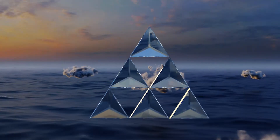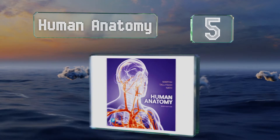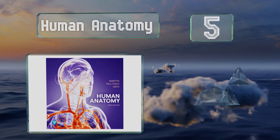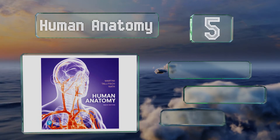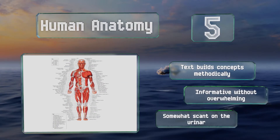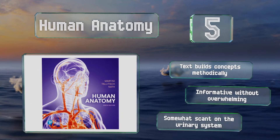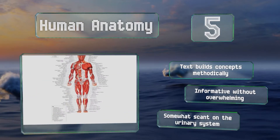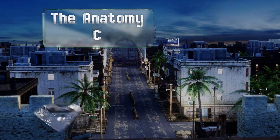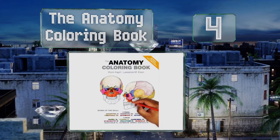Halfway up our list at number five, the authoritatively titled Human Anatomy by Martini, Timmons, and Talich is now enjoying a ninth edition printing. Its atlas-style organization and comprehensive diagrams make the human body relatively easy to understand. The text builds concepts methodically and it's informative without being overwhelming, but is somewhat scant on the urinary system.